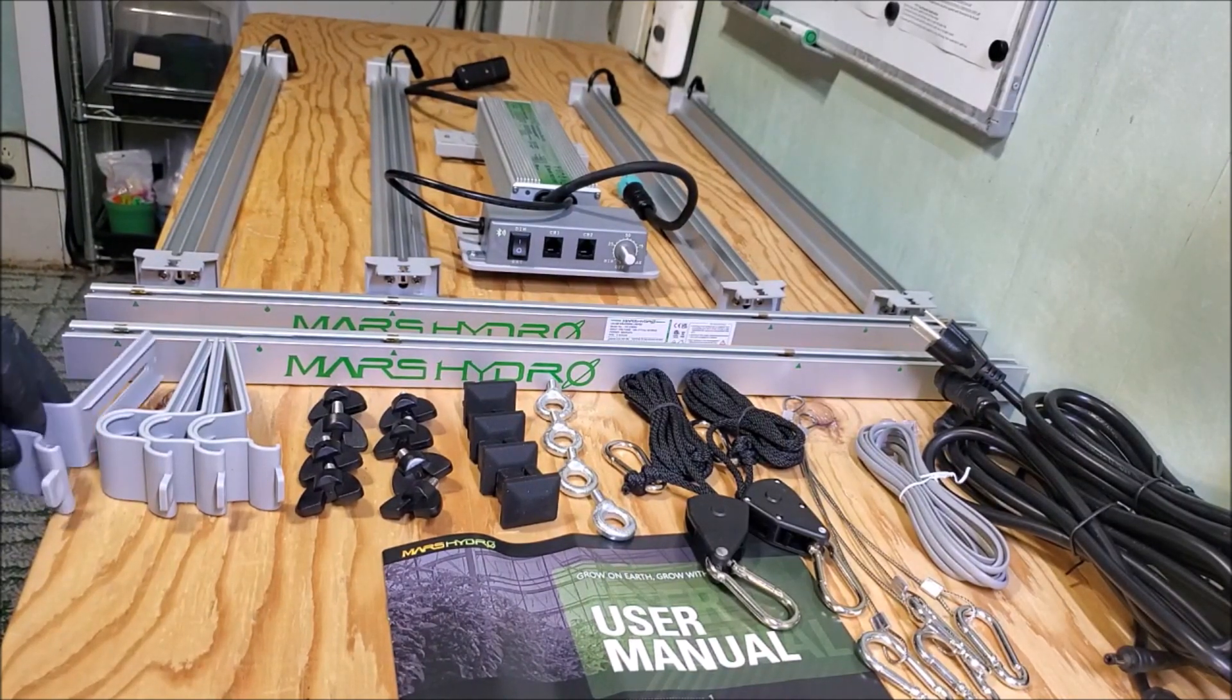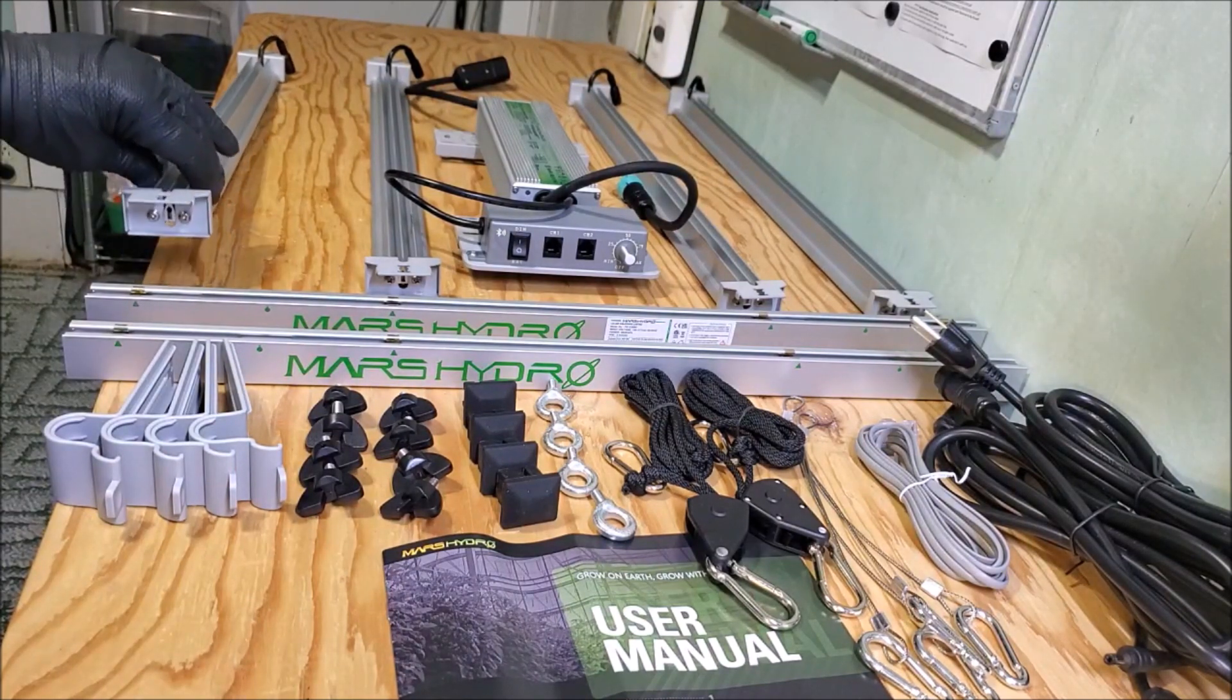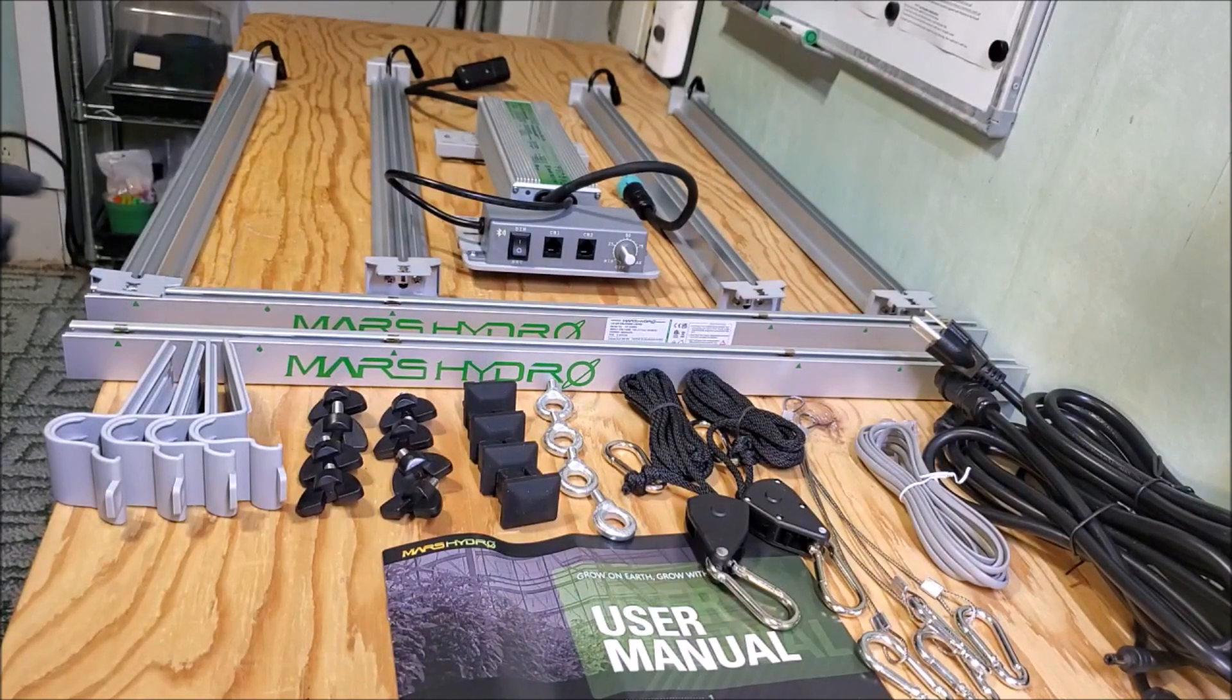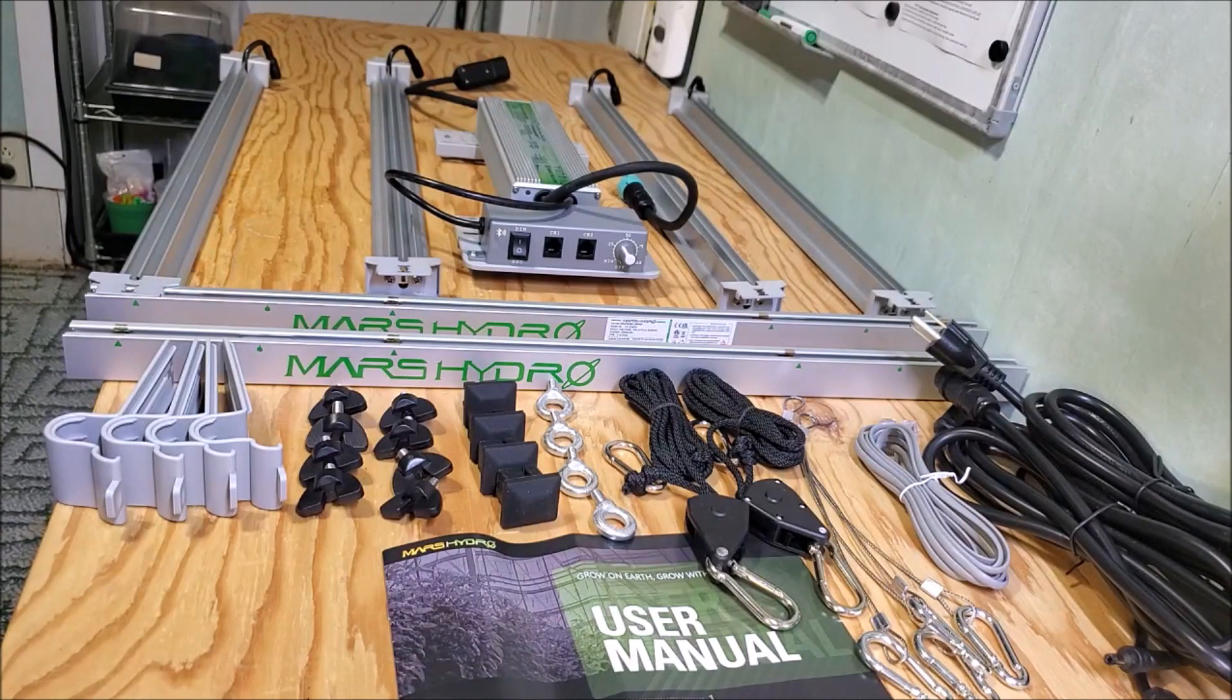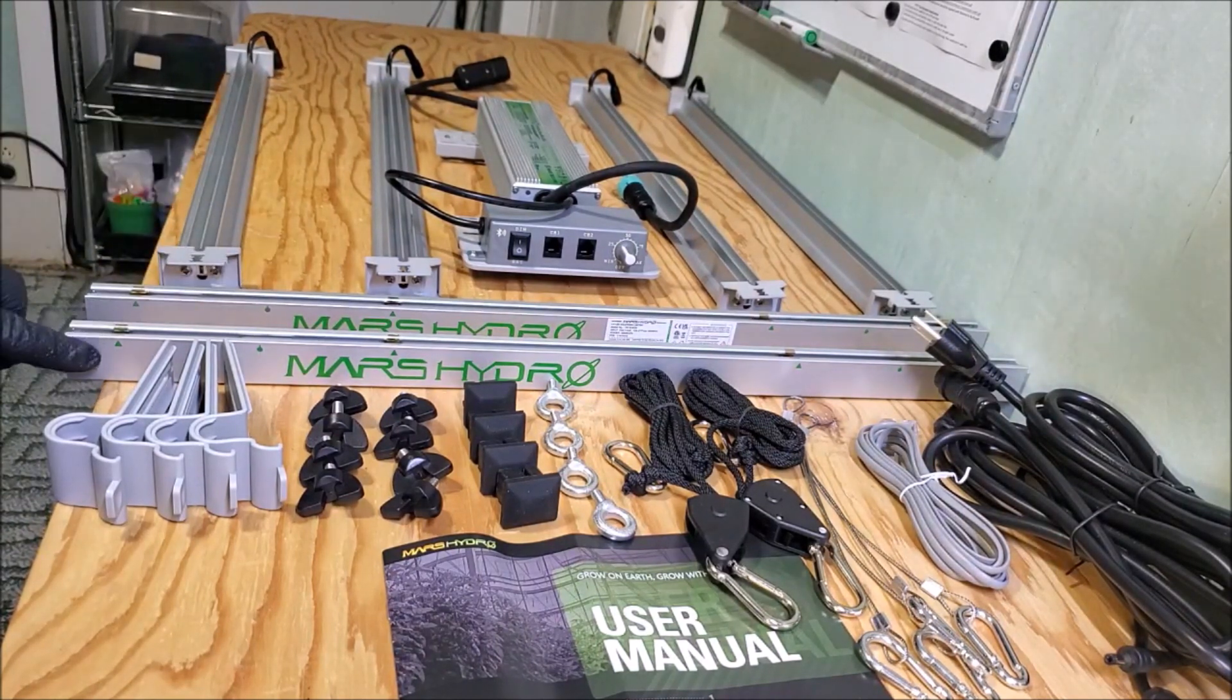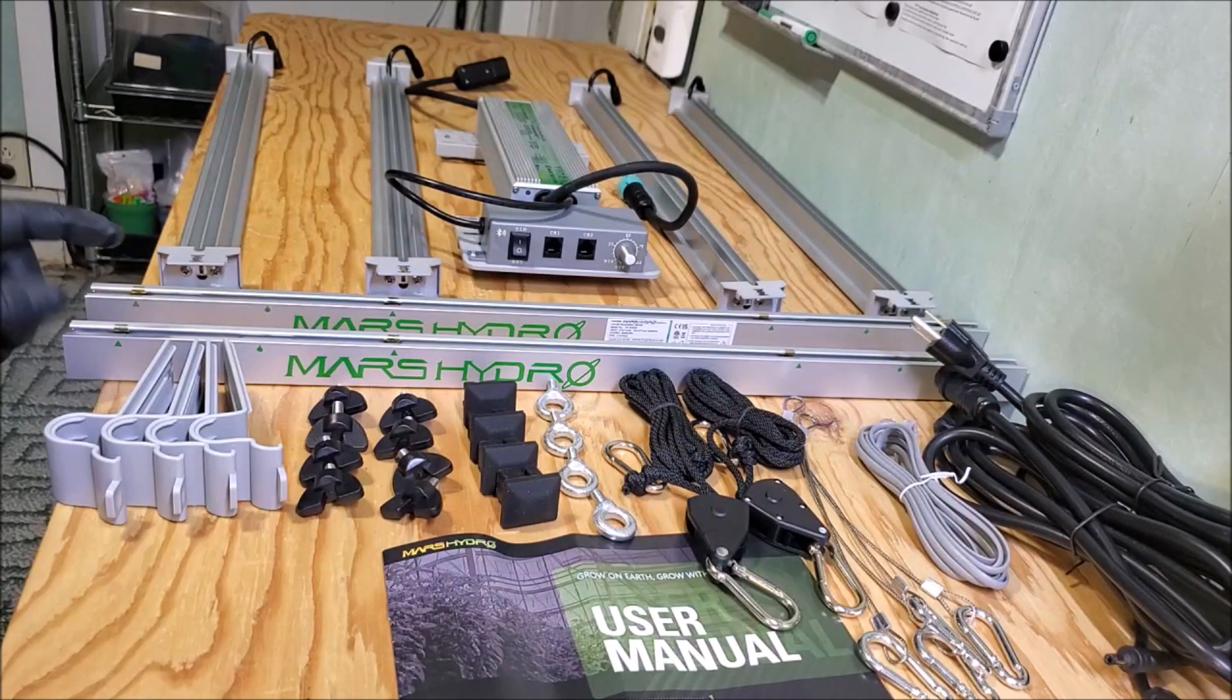You got eight wing nuts. Those are going to be used to attach our bars directly onto our rails. We're going to start off by doing the outside rails first. They're non-movable, only the two center ones are in this particular light. You can see they've got the marks here, a little arrow pointing where they recommend you put them.